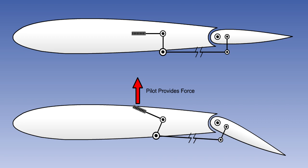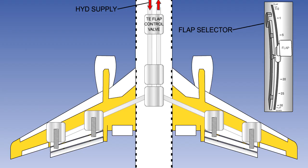In a typical system there is a flight deck selector lever. On light aircraft, this is mechanically connected to the flaps. But on larger aircraft, it will either be mechanically or electrically linked to a flap control valve. The flap control valve controls the flow of hydraulic fluid to a flap drive unit, which consists of a hydraulic motor and a gearbox.